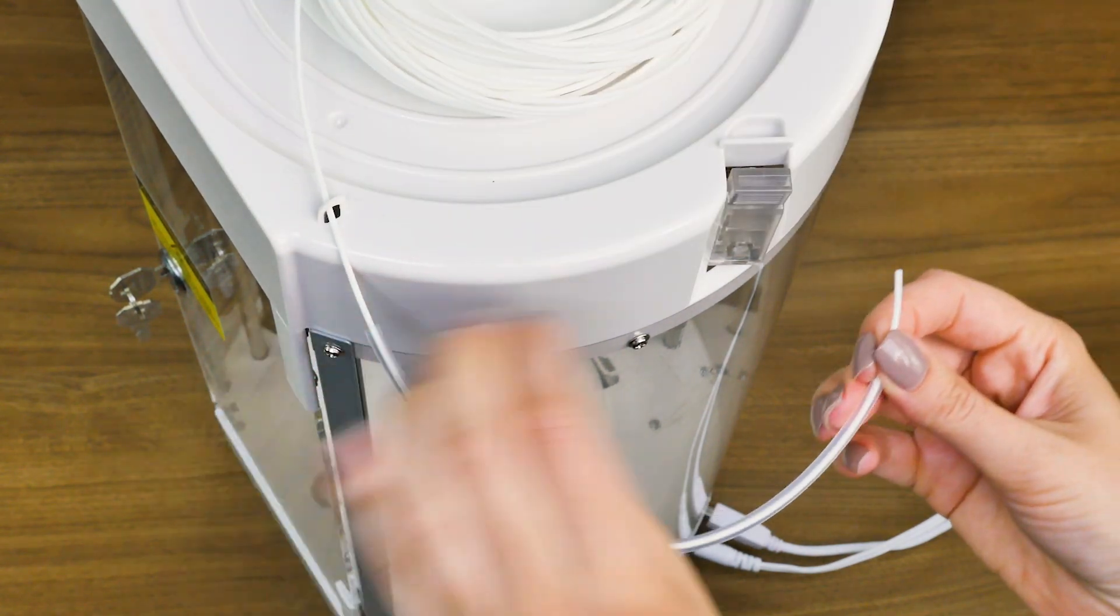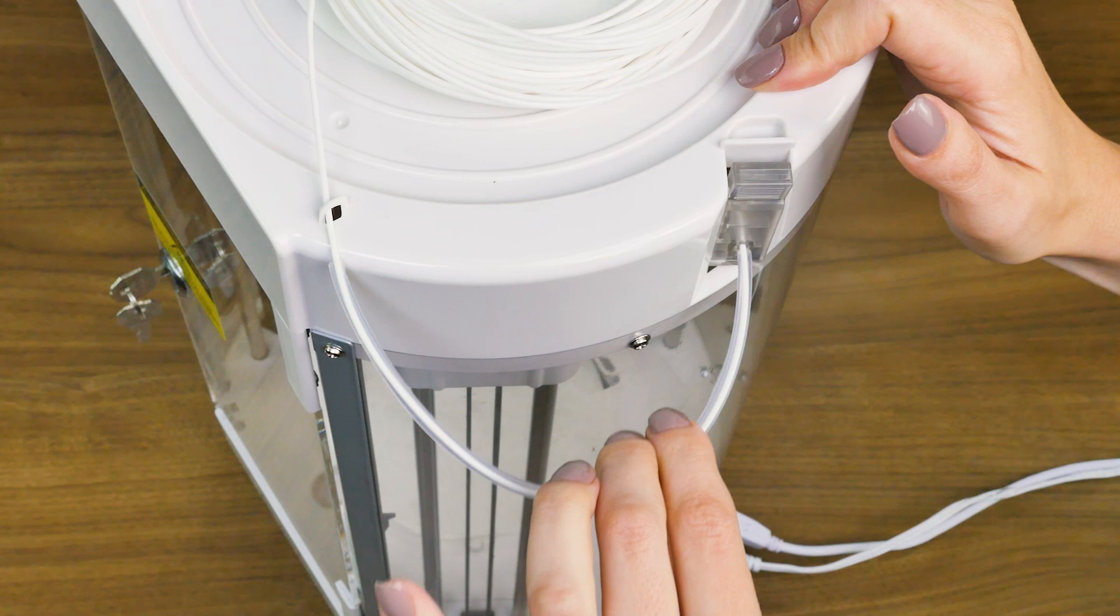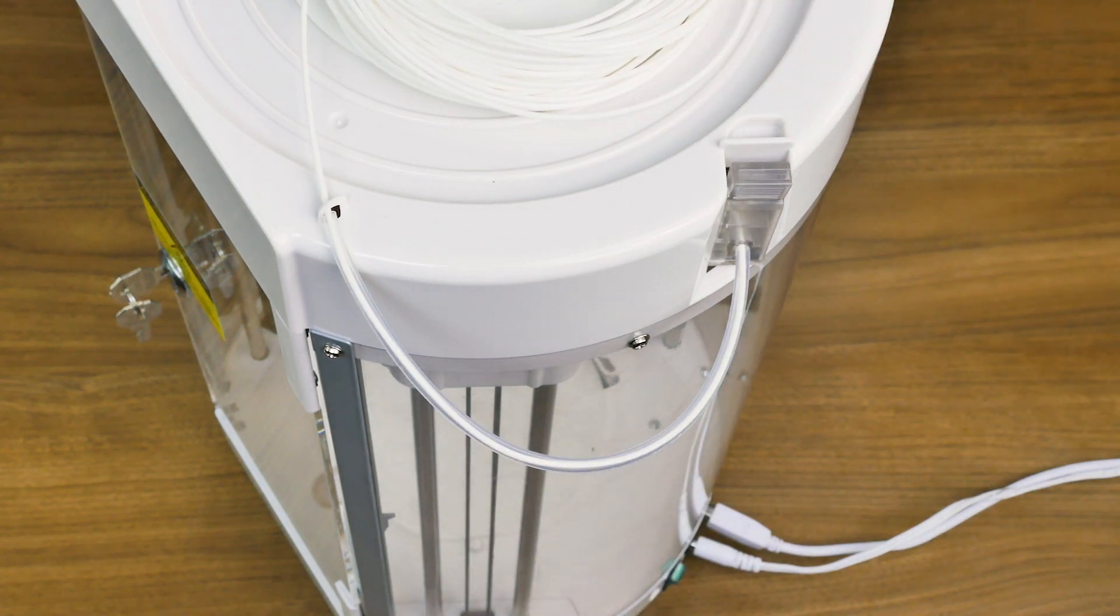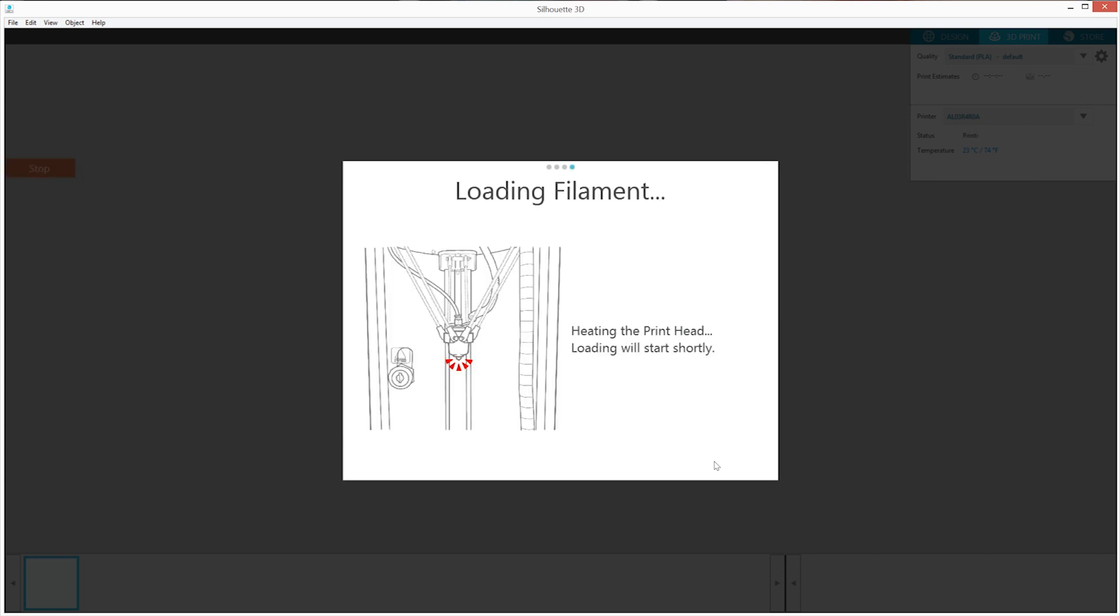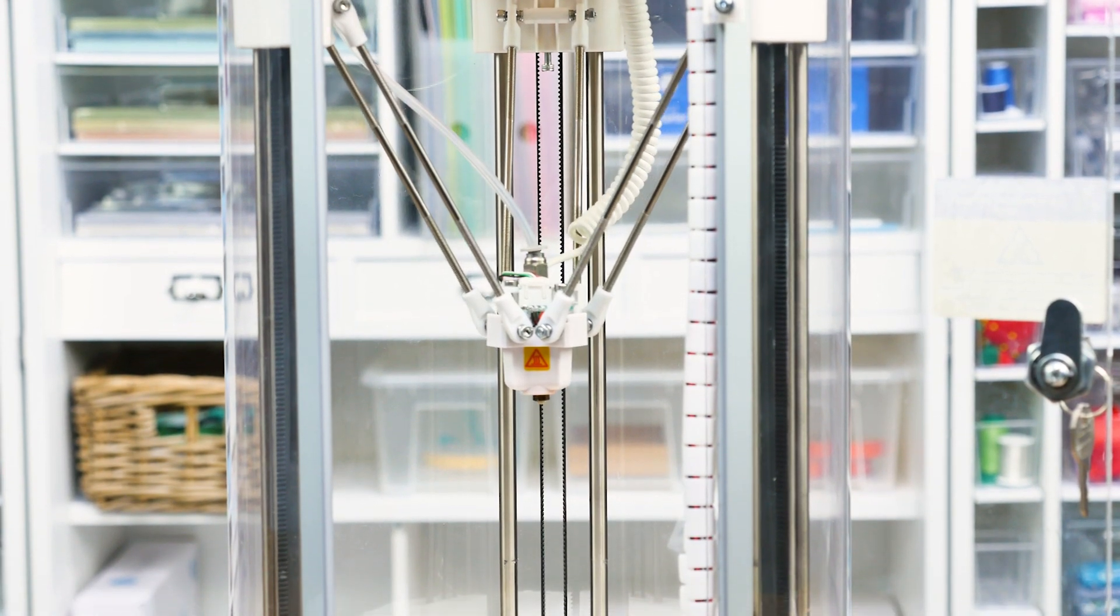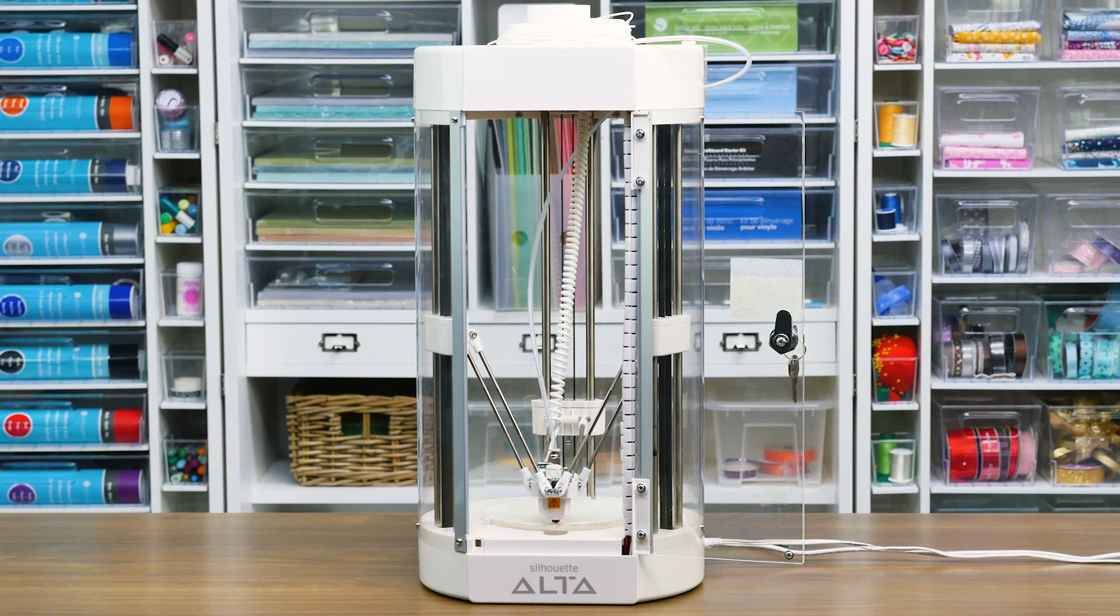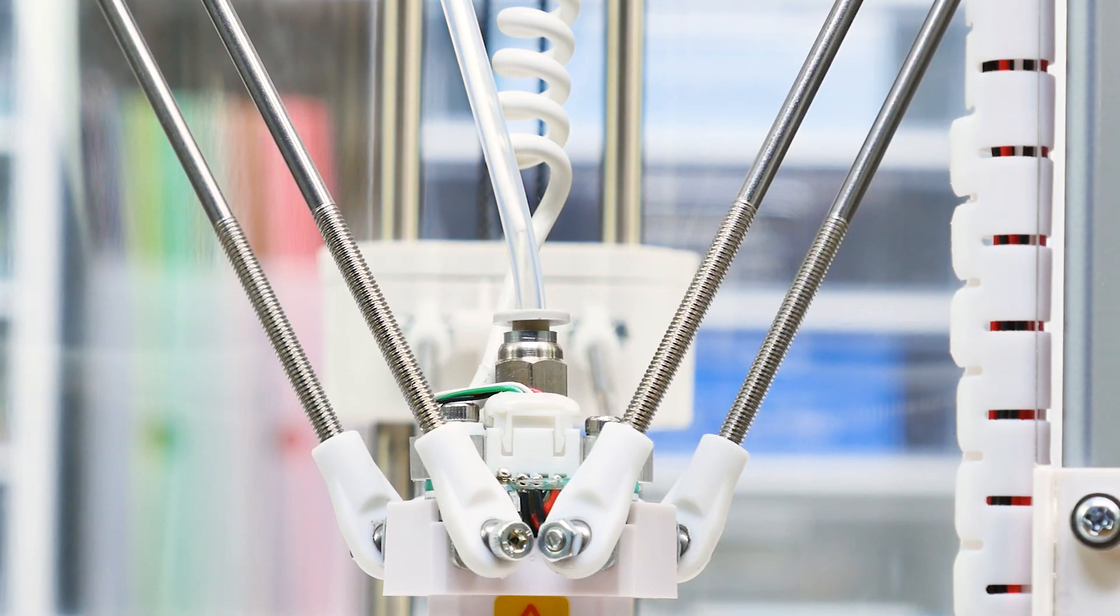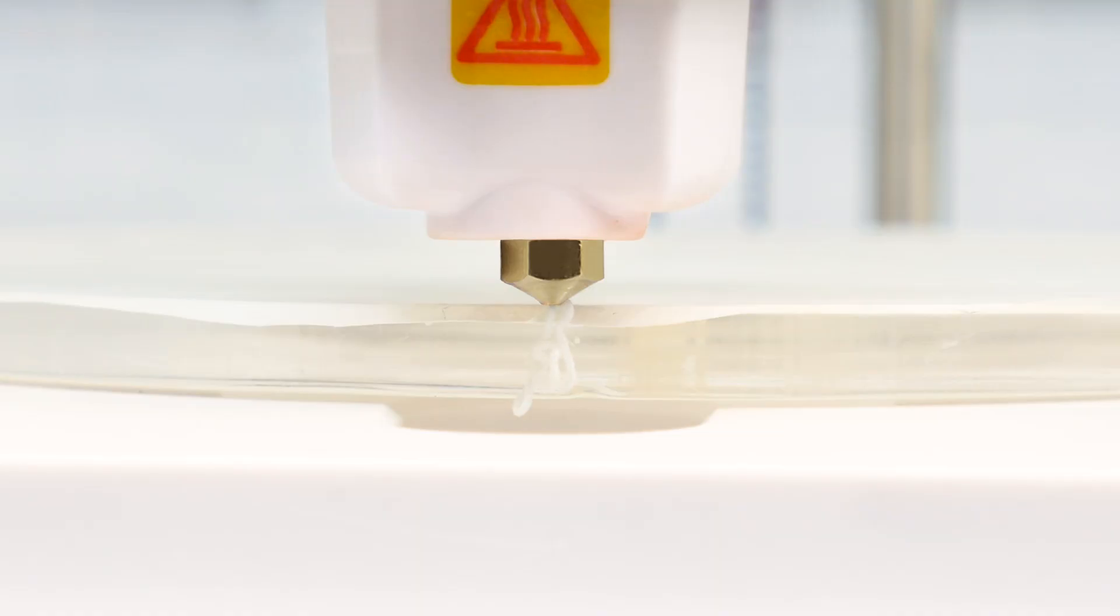Once the filament has been fed through the filament tube, press the tab on the filament clip to open the hole where you can insert the filament. You'll know it's completely inserted when the filament comes to a stop, then release the clip. Click Next in Silhouette 3D and then click Load. The machine will feed the filament through the inner print tube and heat up the print head. The print head will then move down and print a little bit of filament once the filament is warmed up.